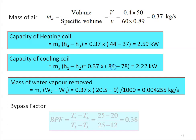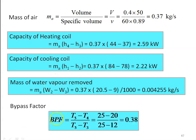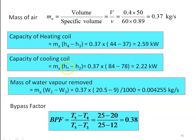For the bypass factor: in the heating process, bypass factor = (surface temperature − outlet temperature) ÷ (surface temperature − inlet temperature) = (25 − 20) ÷ (25 − 13) = 0.38. So the bypass factor of the heating coil is 0.38. These are all the answers for this problem.